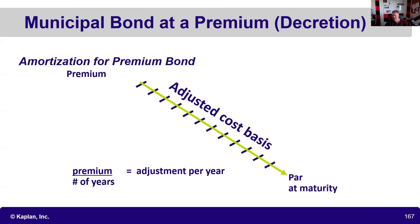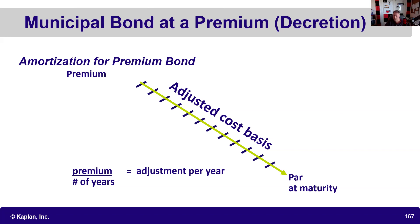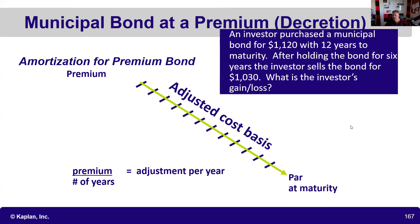Now, the IRS thinks that when you buy a muni bond at a premium, you have other things in your portfolio, and they're correct. So they're not going to let you decide when to take a loss on this bond, because you're buying it for a higher-than-today's tax-free return — that's why it's trading at a premium. They say you've got to take little hits along the way, so we're going to amortize or adjust our cost basis each year.